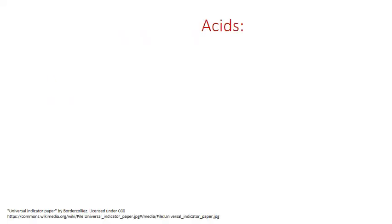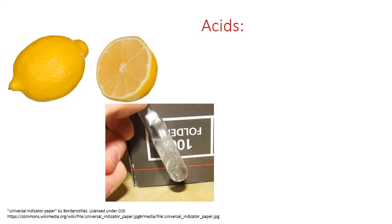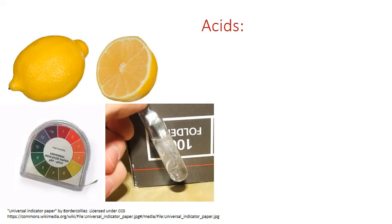Acids have a variety of distinct physical and chemical properties. For example, acids taste sour — that tart taste of lemons is due to citric acid. Acids also react with certain metals to produce hydrogen gas, like zinc in this picture reacting with hydrochloric acid. You can see the bubbles of hydrogen forming in the solution. Acids also tend to turn certain dyes into different colors; for example, litmus paper contains dyes that turn red in the presence of acids.